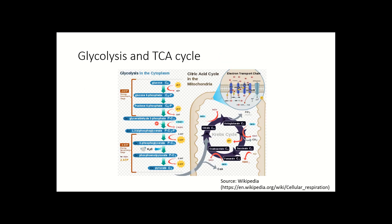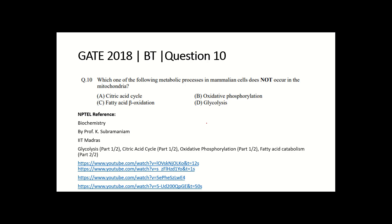Looking at the options: the citric acid cycle (TCA cycle) occurs in the mitochondria; oxidative phosphorylation also occurs in the inner membrane of the mitochondria; and fatty acid beta oxidation occurs in the matrix of the mitochondria. But glycolysis does not occur in the mitochondria — it occurs in the cytosol. So option B, glycolysis, is the correct answer for the process that does not occur in the mitochondria.